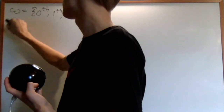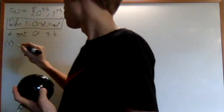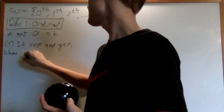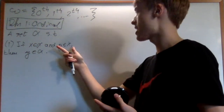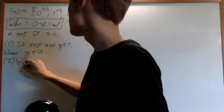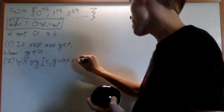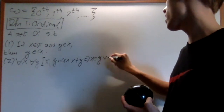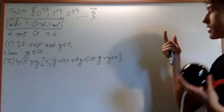So let's put a definition in here. An ordinal is going to be a set, call it alpha, such that: one, if x is in alpha and y is in x, then y is in alpha — basically meaning it's transitive: if some element is in alpha and it has an element, then that element is also in alpha. Two, for any x and y such that both are in alpha and they are not equal to each other, then either x is in y or y is in x — basically meaning any two distinct elements of alpha, one is an element of the other.